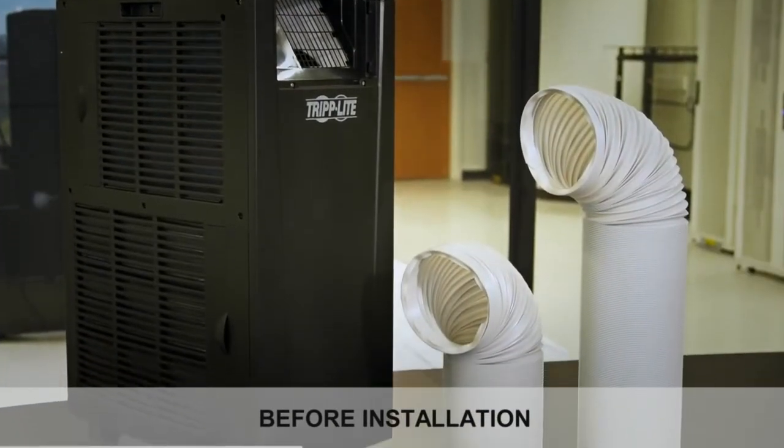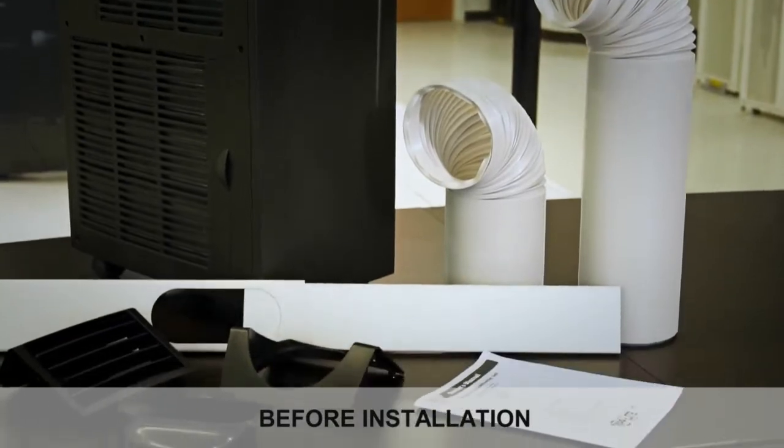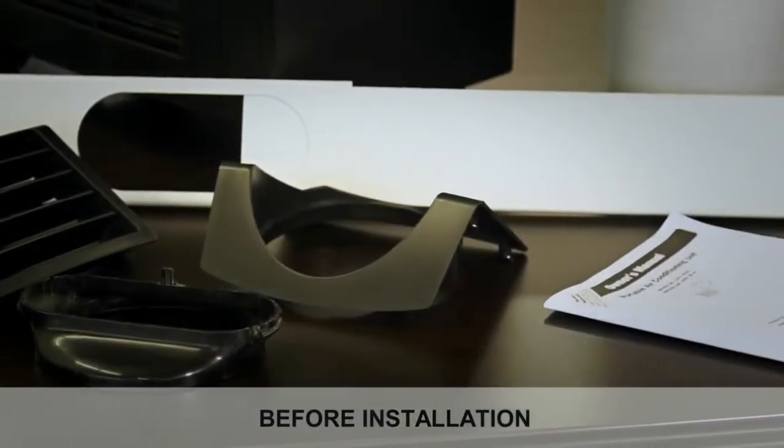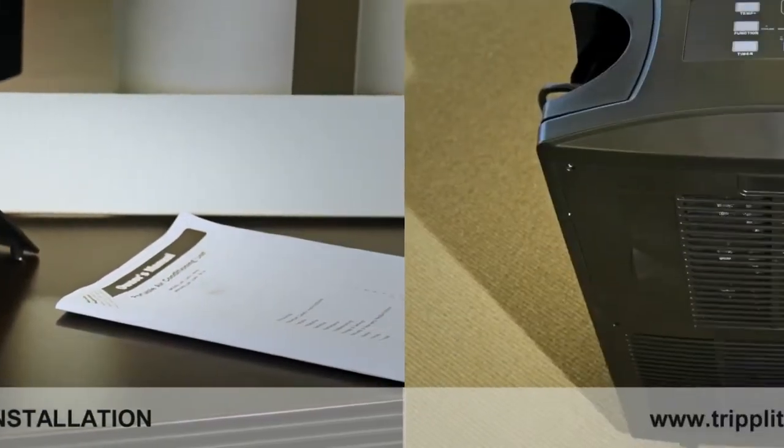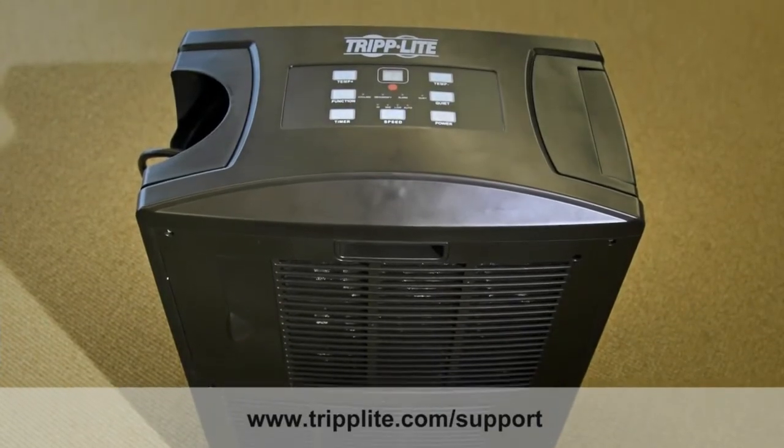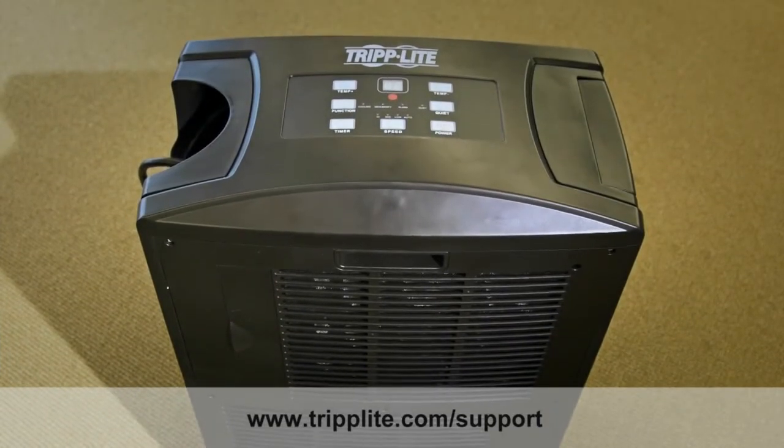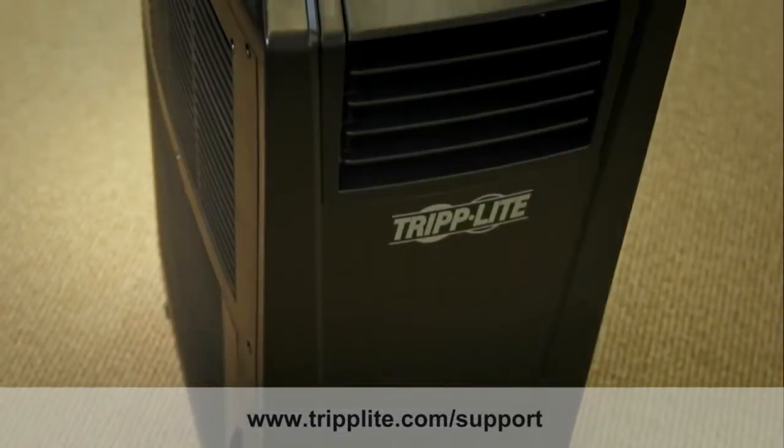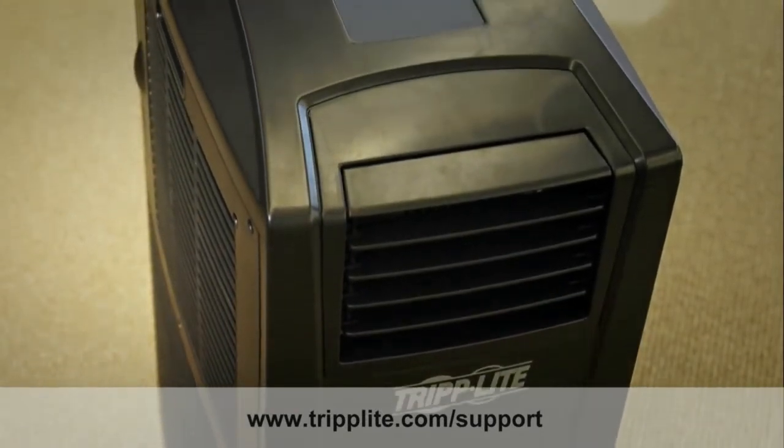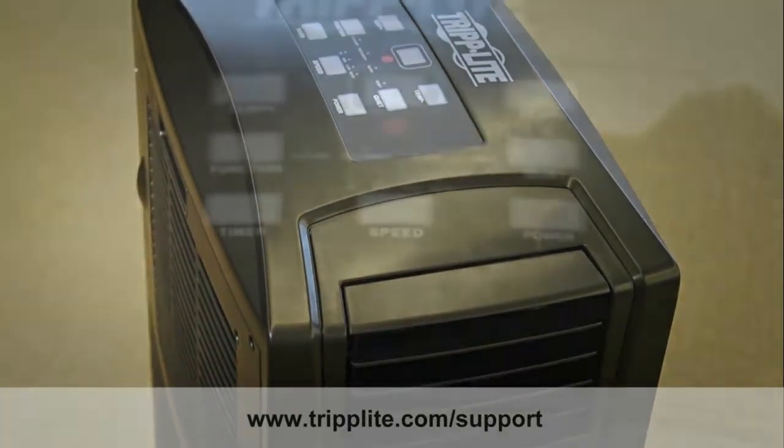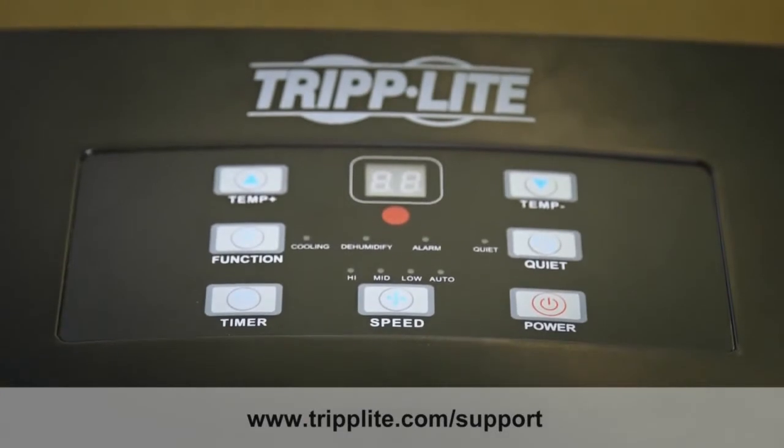After removing the unit from the shipping container, refer to the parts list in the user's guide to ensure that all parts have been included. Next, visually inspect the unit for damage that may have occurred during transit. If you notice a problem, visit www.triplight.com support for service. Do not attempt to operate a damaged unit.